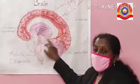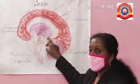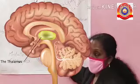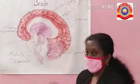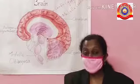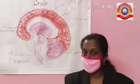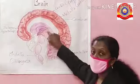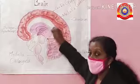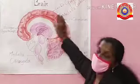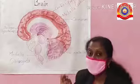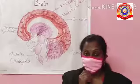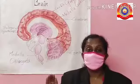The thalamus is seen just below the cerebrum. The peculiarity of the thalamus is that it acts as a relay station of impulses — it sends important impulses to and from the cerebrum. That is why it is called the relay station.